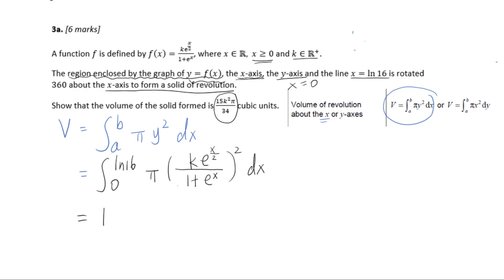The constant number is k squared pi integral from 0 to natural log of 16 of e to the x over 1 plus e to the x power squared dx. Organize as k squared pi integral from 0 to natural log of 16, e to the x over 1 plus e to the x squared dx.